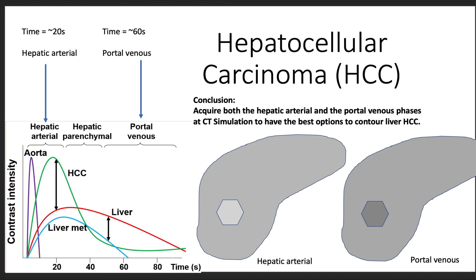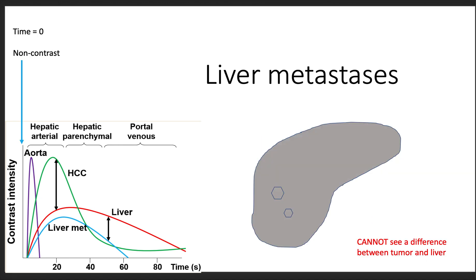Let's see how the contrast dynamics look for liver metastases. Once again, when time equals zero, the contrast has not begun circulating yet, so the liver all looks the same — all gray — and it would be very hard to see or notice where the liver metastases are.